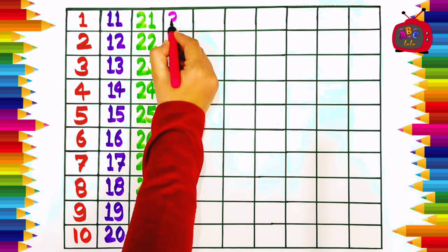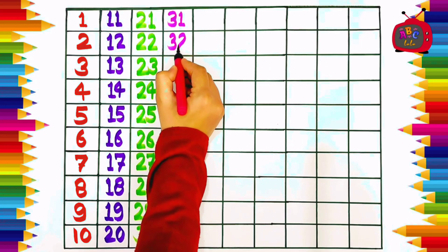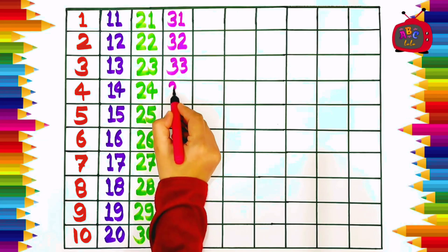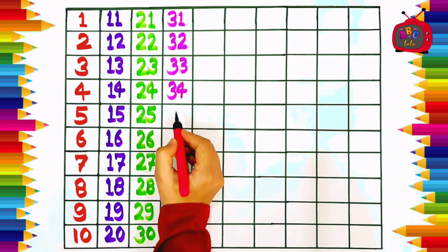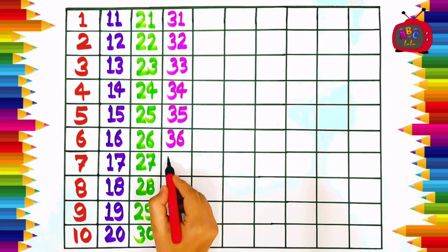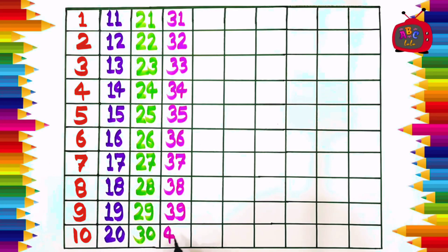Three one, thirty-one. Three two, thirty-two. Three three, thirty-three. Three four, thirty-four. Three five, thirty-five. Three six, thirty-six. Three seven, thirty-seven. Three eight, thirty-eight. Three nine, thirty-nine. Four zero, forty.